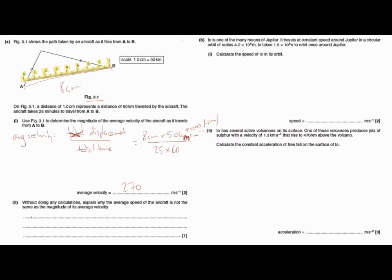Part II. Without doing any calculations, explain why the average speed of the aircraft is not the same as the magnitude of its average velocity.